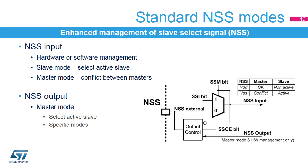The slave select signal is commonly used by the master node to select the slave node for communication. The slave select signal is always mandatory in multi-master topology and mostly in multi-slave topologies too, except for some very rare and specific cases — for example, when all the slaves receive the same data while no more than one slave is transmitter, or when slaves are connected in a daisy chain structure. Though the slave select signal implementation is not always necessary, it could be helpful for data flow synchronization in any case. The slave select signal can operate as an input or as an output.